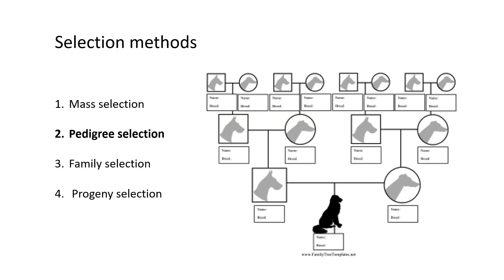Then we have pedigree selection. Pedigree selection is when you want to select an individual, but before you use this individual you want to know its history — what do its parents look like, grandparents and great-grandparents, and what are their characteristics? Does this individual have those characteristics? Because this will tell you whether it will pass on those characteristics to its offspring. You select it based on its pedigree, based on the information of its ancestry.